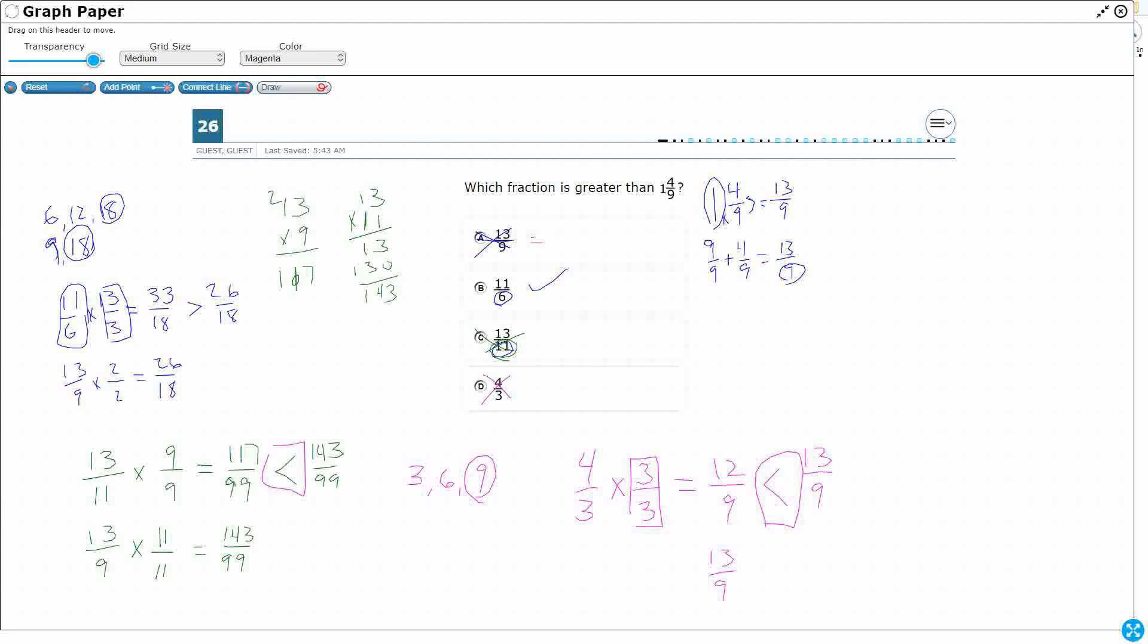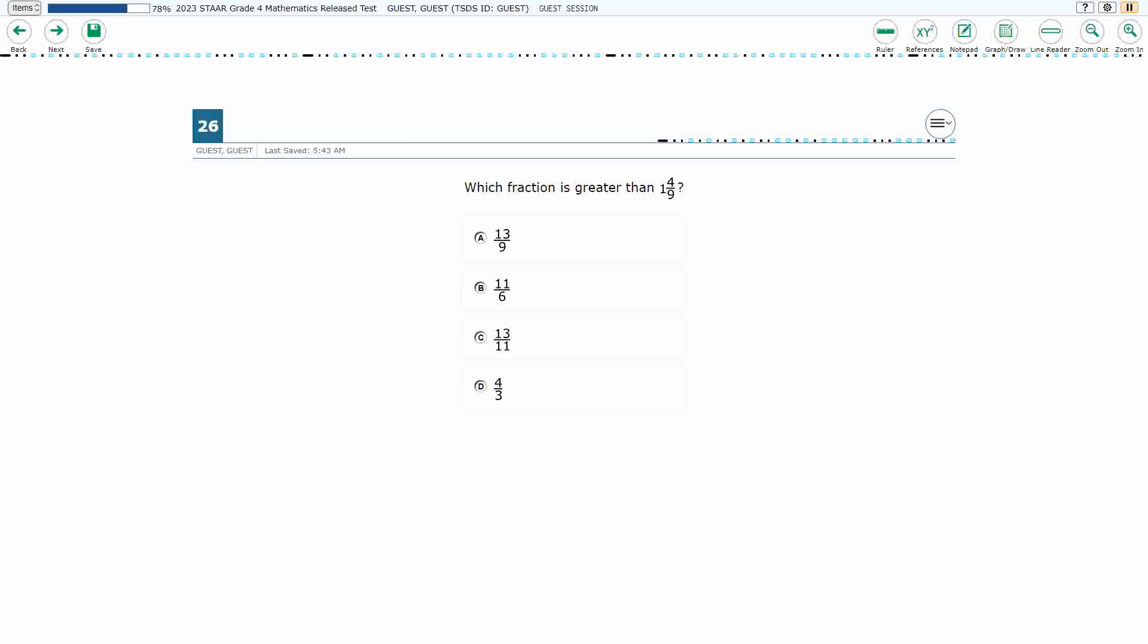I don't want this less than. I don't want this equal. This one is just equal, right? I do want this greater than. So we were correct. My answer here is going to be B, 11 sixths.